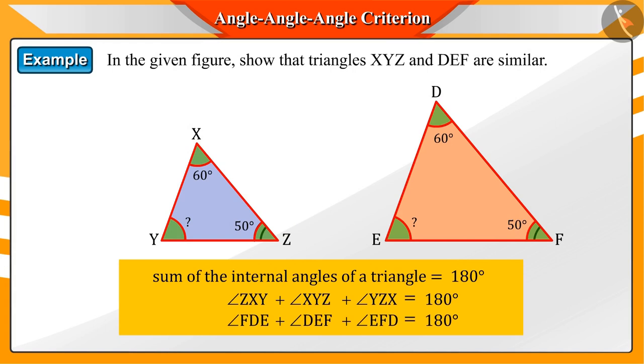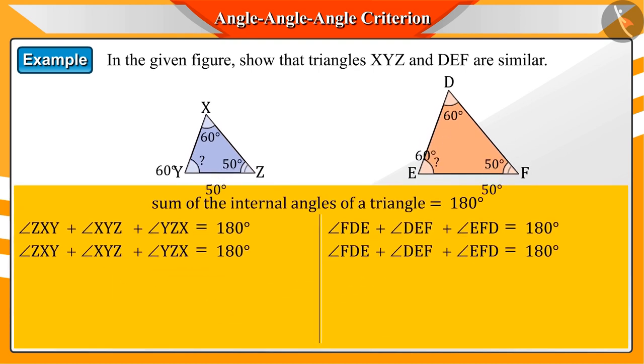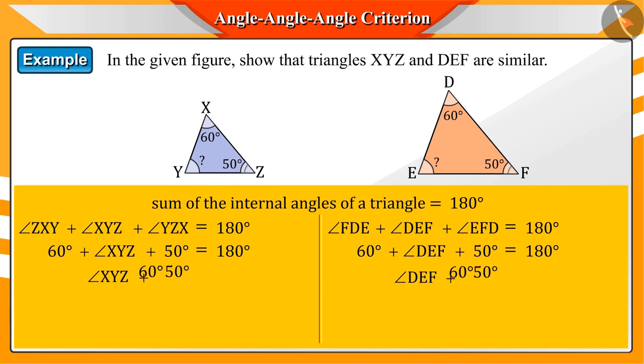We know that the sum of all the internal angles of a triangle is equal to 180 degrees. With the help of this, we can find the measurement of the third angle.